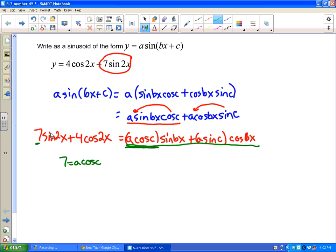Because what's in front of sine here has to equal what's in front of sine here. In the same way, what's in front of cosine here has to equal what's in front of cosine here. So that means that I have 4 equals a sine c.